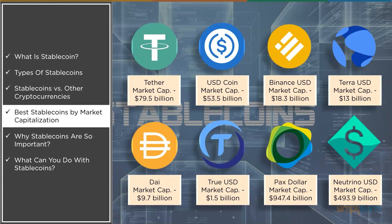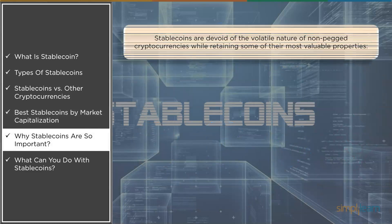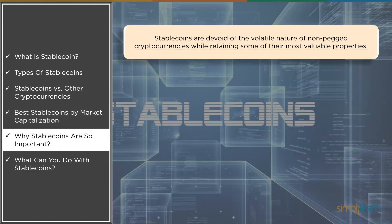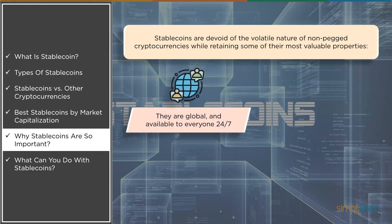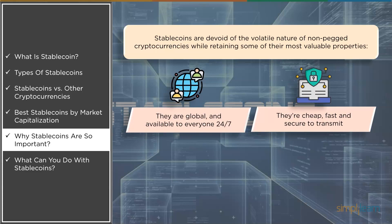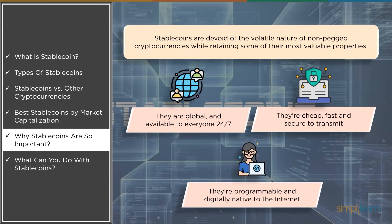Now let's understand why stablecoins are so important to people. Stablecoins are devoid of the volatile nature of non-pegged cryptocurrencies while retaining some of their most valuable properties. For example, stablecoins are open, global, and available to everyone on the internet. They transport data quickly, cheaply, and very securely. And they are programmable and digitally native to the internet.